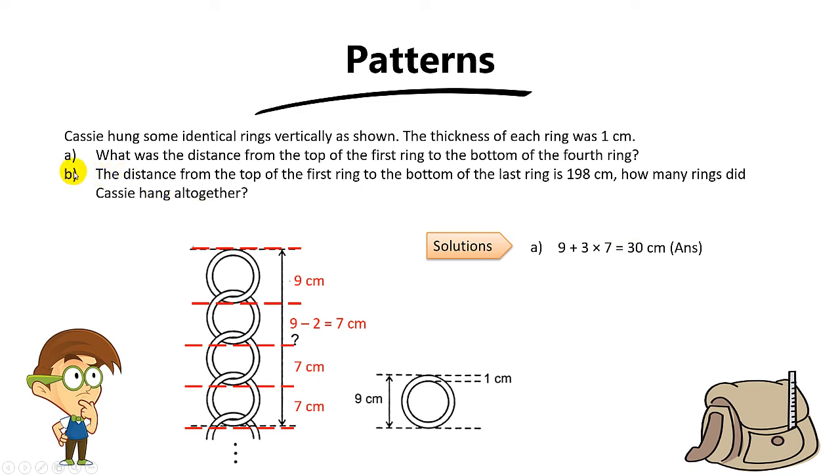Okay, and now for part B. The question says that the distance from the top of the first ring to the bottom of the last ring is 198cm. So from the first all the way to the last is 198cm. And the question asks how many rings did KC hang all together?